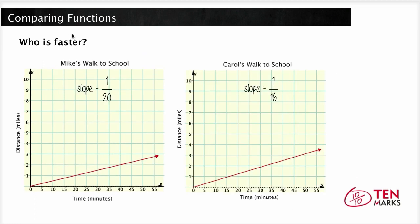Now let's compare. Who is faster? You can see these graphs below of Mike's walk to school and Carol's walk to school. We've already established that Mike can walk 1 mile in 20 minutes and Carol can walk 1 mile in 16 minutes. Since it takes Carol less time to walk this mile, Carol can walk faster than Mike. Now you can also compare the rates of change or the slopes for each. Mike's slope is 1 over 20 and Carol's slope is 1 over 16. Since Carol's graph has the greater or more steep slope, the slope represents speed. So Carol's speed is faster. Great job and I'll see you next time.